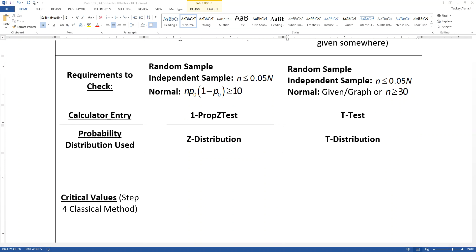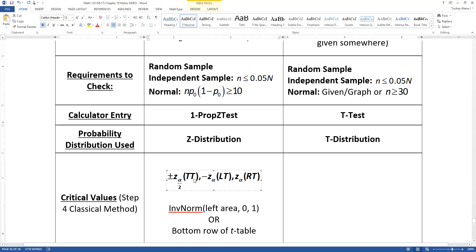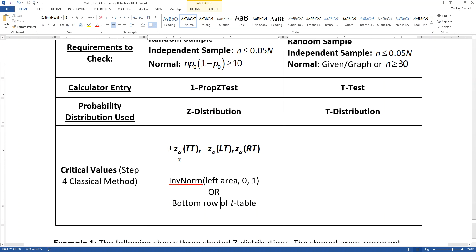Step four is how you find your critical values, and it's very similar to how you found them for confidence intervals. For confidence intervals they're always plus or minus z-alpha over 2. But for hypothesis tests, it could be negative z-alpha for a left-tailed test or positive z-alpha for a right-tailed test. You can get those from inverse norm, that's generally the left-tailed area, unless you have the most recent newest addition of the calculator.